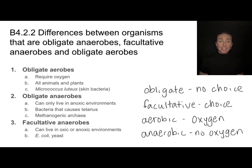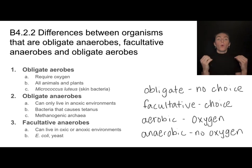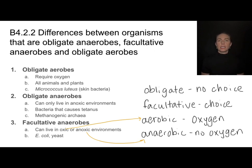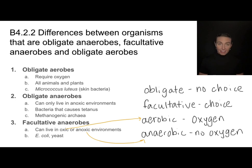Then you have the really interesting ones — facultative anaerobes. They can thrive in both oxic (aerobic) or anoxic (anaerobic) environments. Note that oxic and aerobic are interchangeable, as are anoxic and anaerobic — they mean the same thing. Examples include yeast and E. coli, which will do different things in those environments but can utilize both.